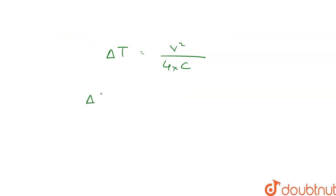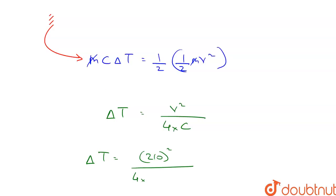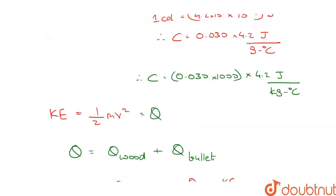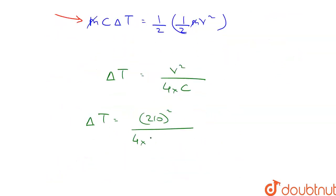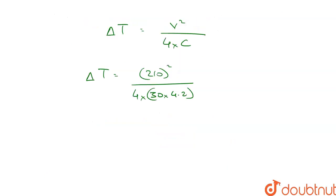Inserting values we get delta T is equal to 210 whole square divided by 4 into this becomes equal to 30 so 30 into 4.2.